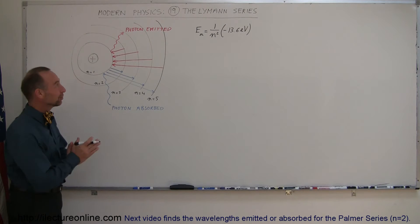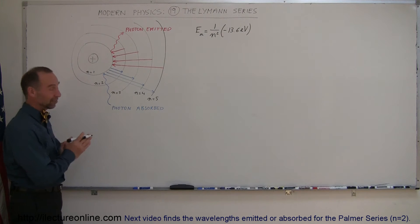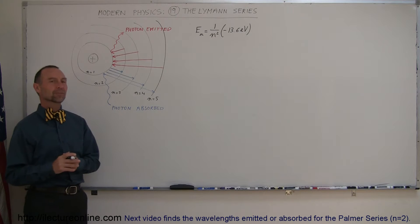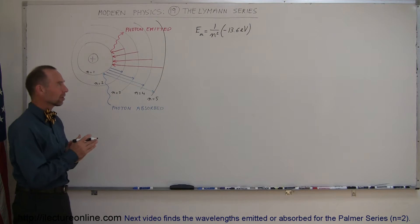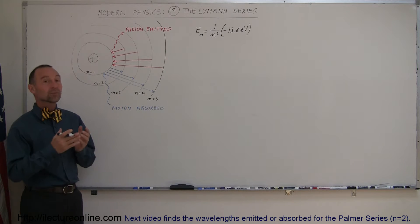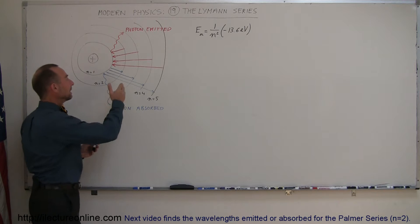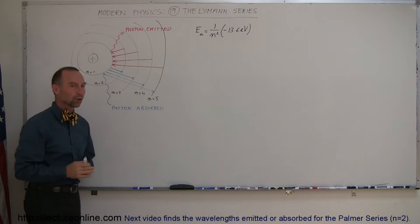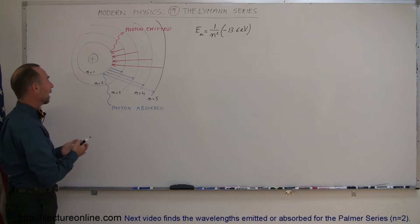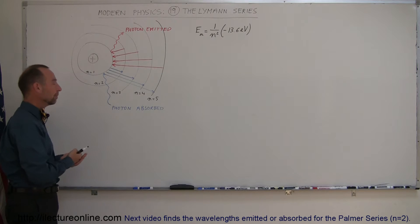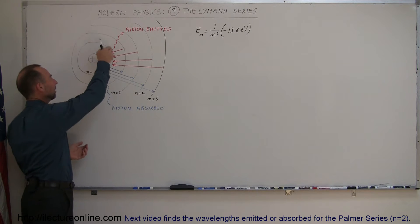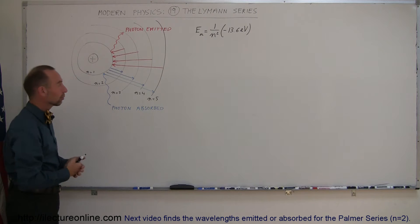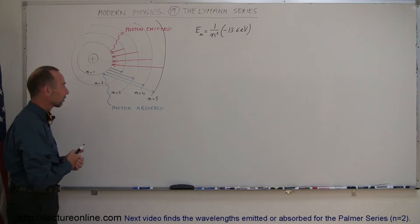Welcome to ElectronLime and our new topic today, still on modern physics, but the topic is the Lyman series. The Lyman series talks about the quantum jumps electrons make in the various orbits around the nucleus of an atom. We're looking at the simplest atom here — the Bohr atom, or the hydrogen atom — a single proton in the center and the various energy levels around it representing the various orbits electrons can be in.